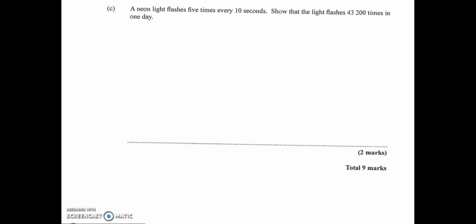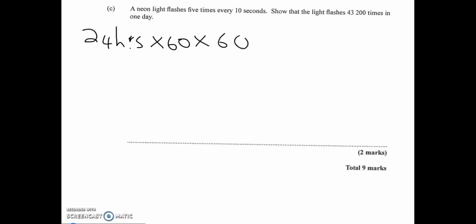Part c: a neon light flashes five times every 10 seconds. Show it flashes 43,200 times in one day. One day has 24 hours. To find seconds in a day: multiply by 60 for minutes and by 60 again for seconds — 24 × 60 × 60 = 86,400 seconds in a day.